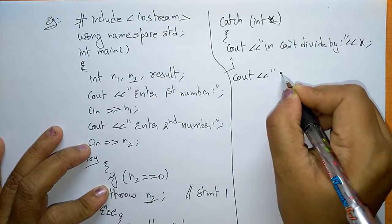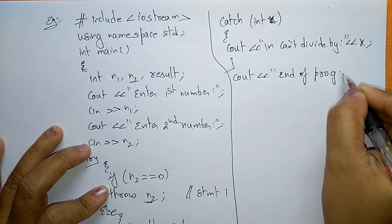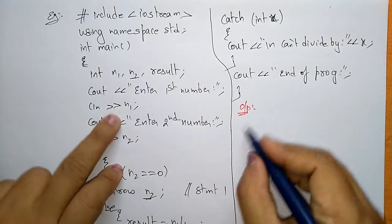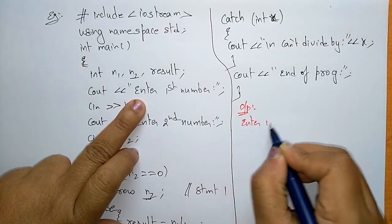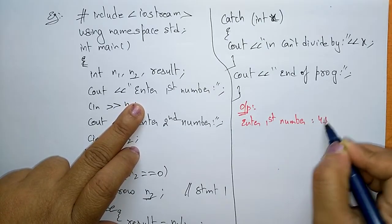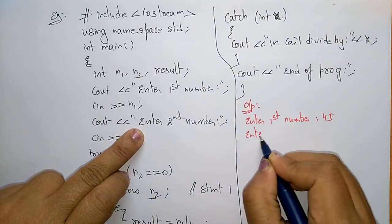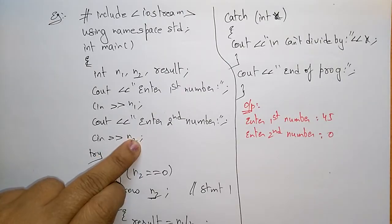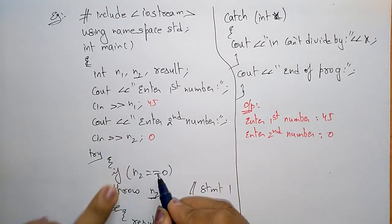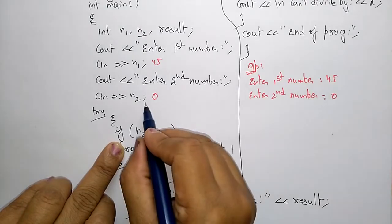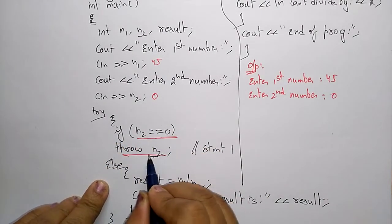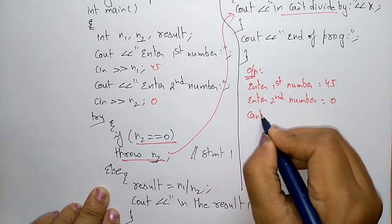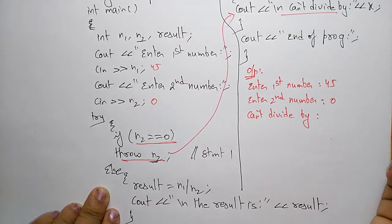Now what will be the output? First I enter the values. Enter first number — I entered 45. Enter second number — I enter 0. So n1 is 45 and n2 is zero. Since n2 is zero, it throws the exception — throw n2 — and execution goes to the catch block.